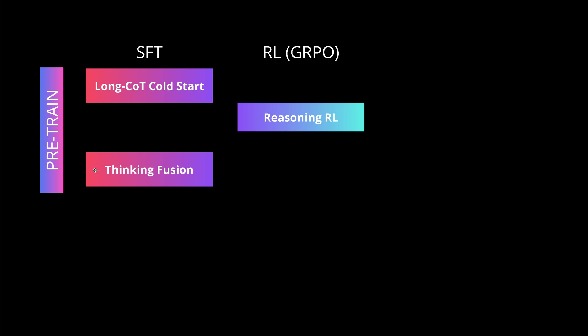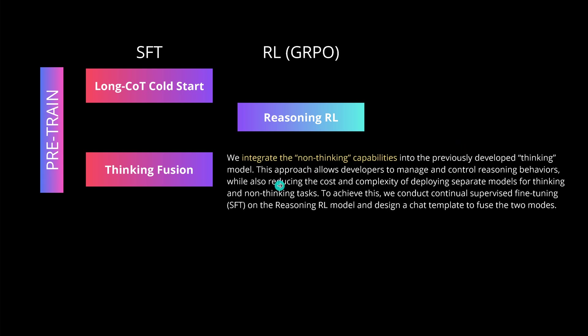The next step - the thinking/non-thinking fusion - is where the dynamic switch happens. Rather than starting simple and increasing complexity, the authors integrated non-thinking capabilities into the already-developed thinking model. Interestingly, you don't start with the simple thing and increase complexity; instead you take the complex thinking-capable model and integrate non-thinking capabilities using a template approach - simple and elegant.